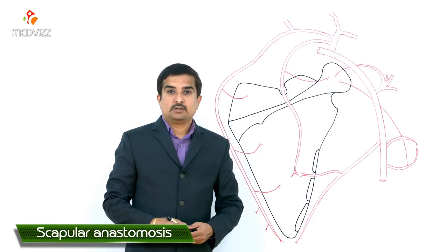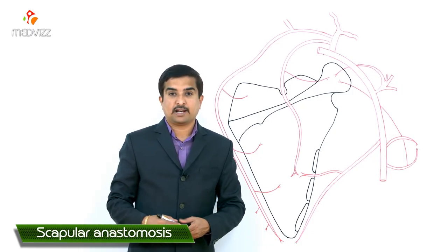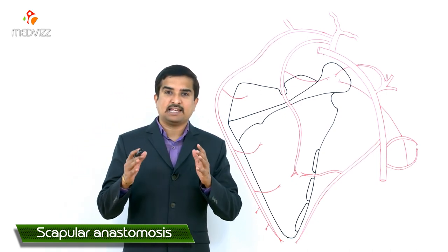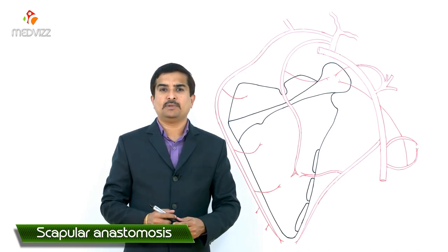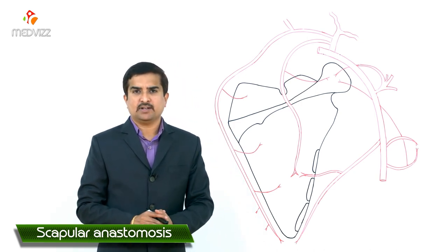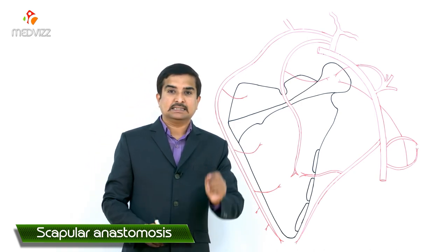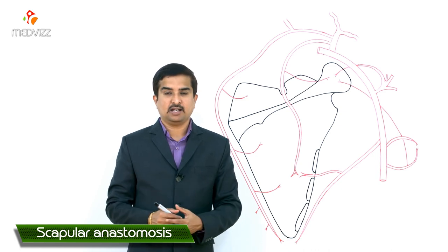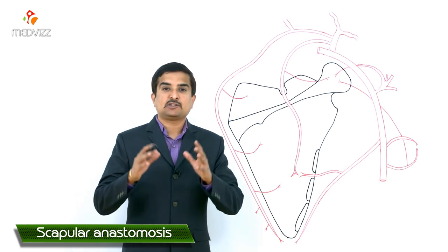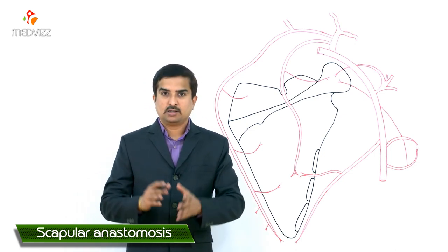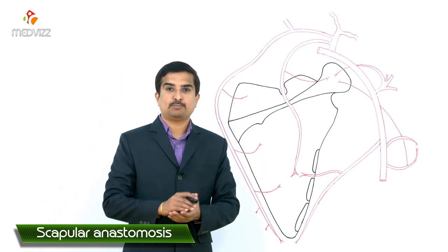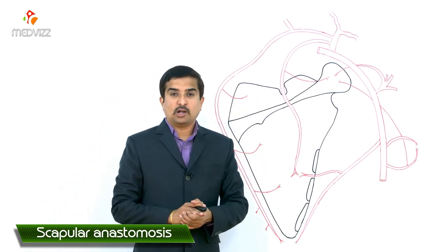Let us discuss the arterial anastomosis around the scapula. This anastomosis is principally formed between branches arising from the first part of the subclavian artery as well as the third part of the axillary artery. The overall scapular anastomosis takes place at two different sites: one is around the body of the scapula, and the second is around the acromion process of the scapula.